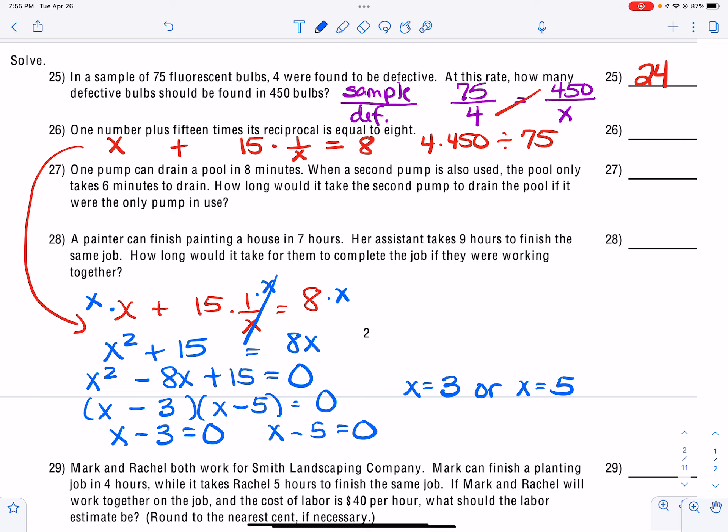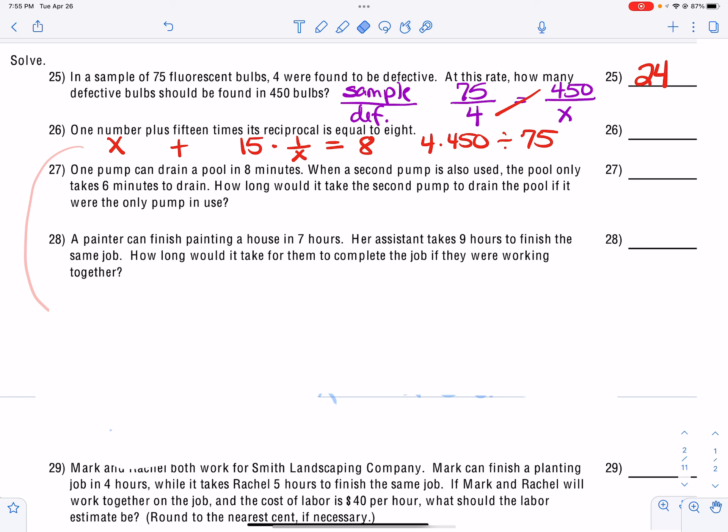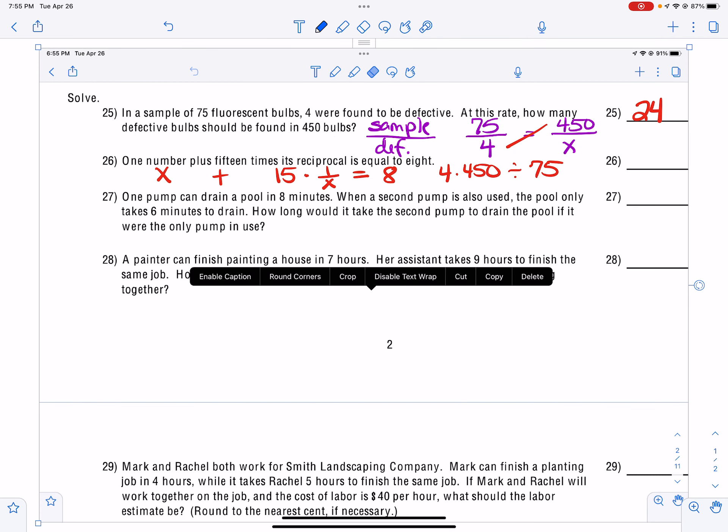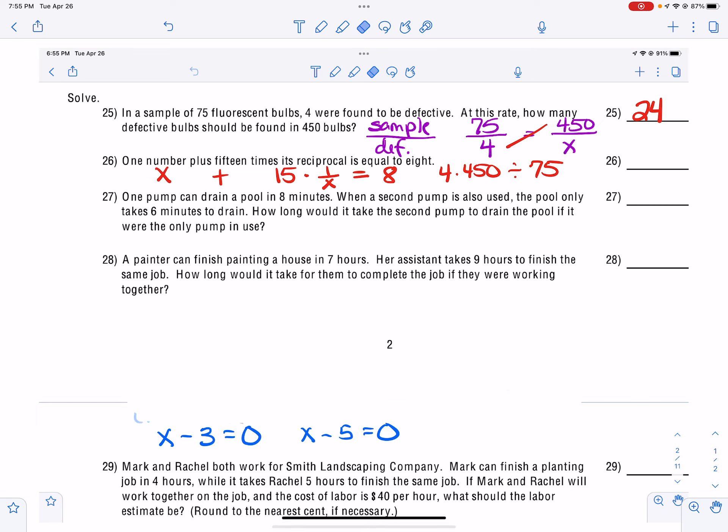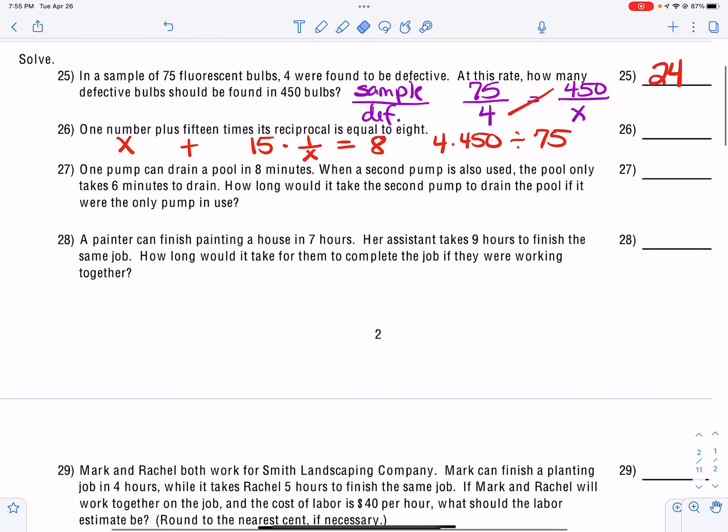Now when we get to number 27 and number 28 and number 29, these are all going to be work problems. So I'm going to erase this here so that we can come up with our table for number 27. For number 27, we have one pump drains a pool in 8 minutes. When a second pump is used with the first pump, then it only takes 6 minutes to drain.